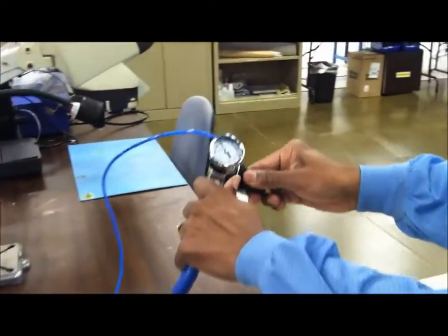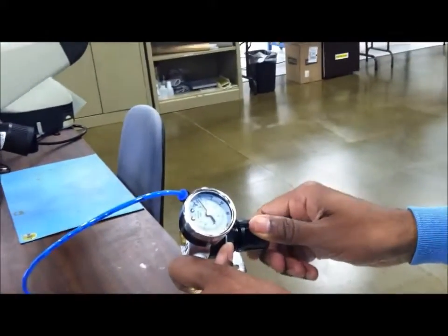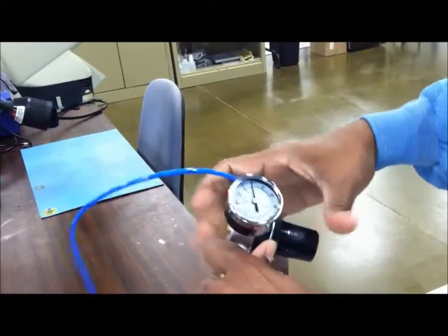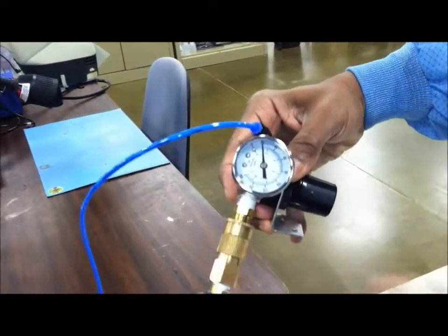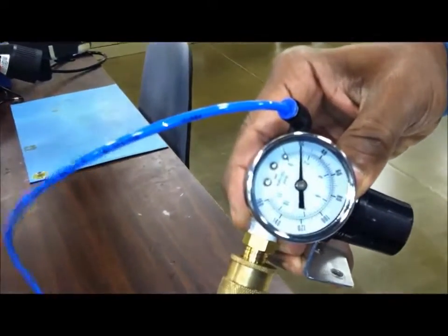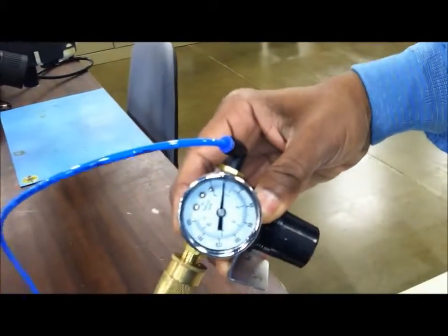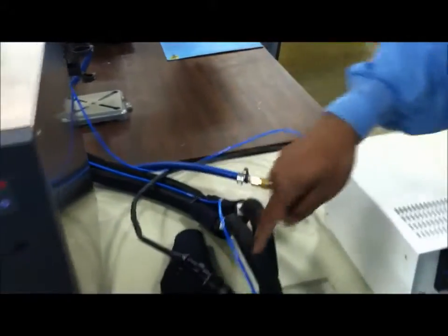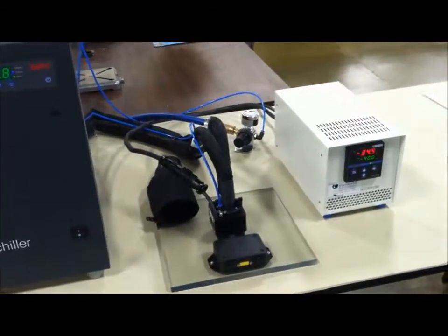For example, at this point we recommend to set it up at 10 to 20 psi dry air. Because now that we are going down to minus 40 degrees C, there will be condensation appearing on it. Now I set it up at 20 psi in the dry air. The dry air basically comes down and circulates inside the head, removing the condensation.